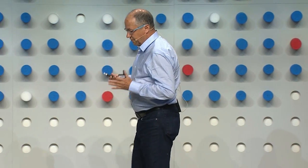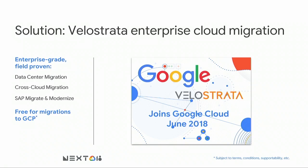Velostrata has been designed from the ground up to address exactly these challenges. This is an enterprise-grade, field-proven solution focused on three major use cases: number one, data center migration — horizontally moving whole data centers into public cloud; number two, large-scale cloud-to-cloud migration, such as moving workloads from AWS into Google Cloud; and number three, a specific focus on SAP — both lift and shift, as well as lift and modernize, moving existing DB2, Oracle, or SQL databases into HANA in conjunction with moving to the cloud.